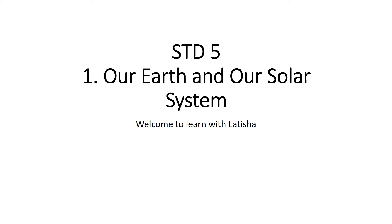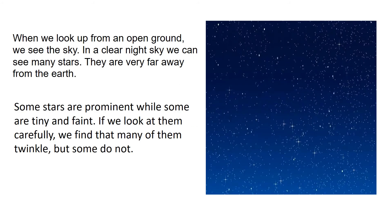Chapter 1: Our Earth and Our Solar System. When we look up from an open ground, we see the sky. In a clear night sky, we can see many stars. They are far away from the earth. Some stars are prominent — some are bright, while some are tiny and faint. If we look at them carefully, we find that many of them twinkle, but some do not.